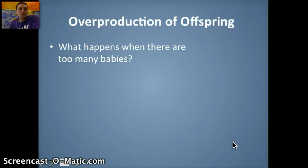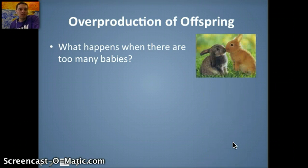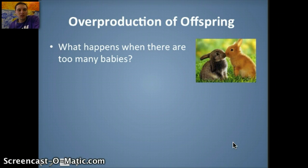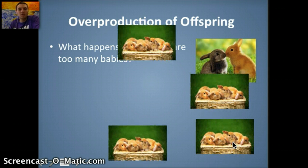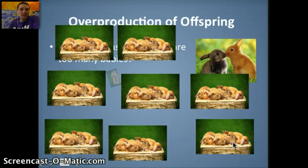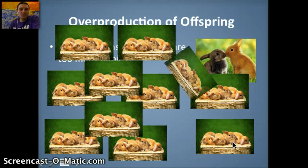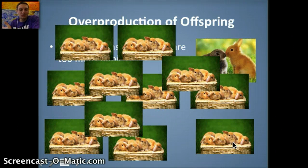So what happens when there are too many babies? For example, rabbits like to produce a lot. Generally, organisms produce more babies than the environment can support. Rabbits have some babies and more and more, and we get lots and lots of offspring. Unfortunately, the environment cannot support all of these offspring.